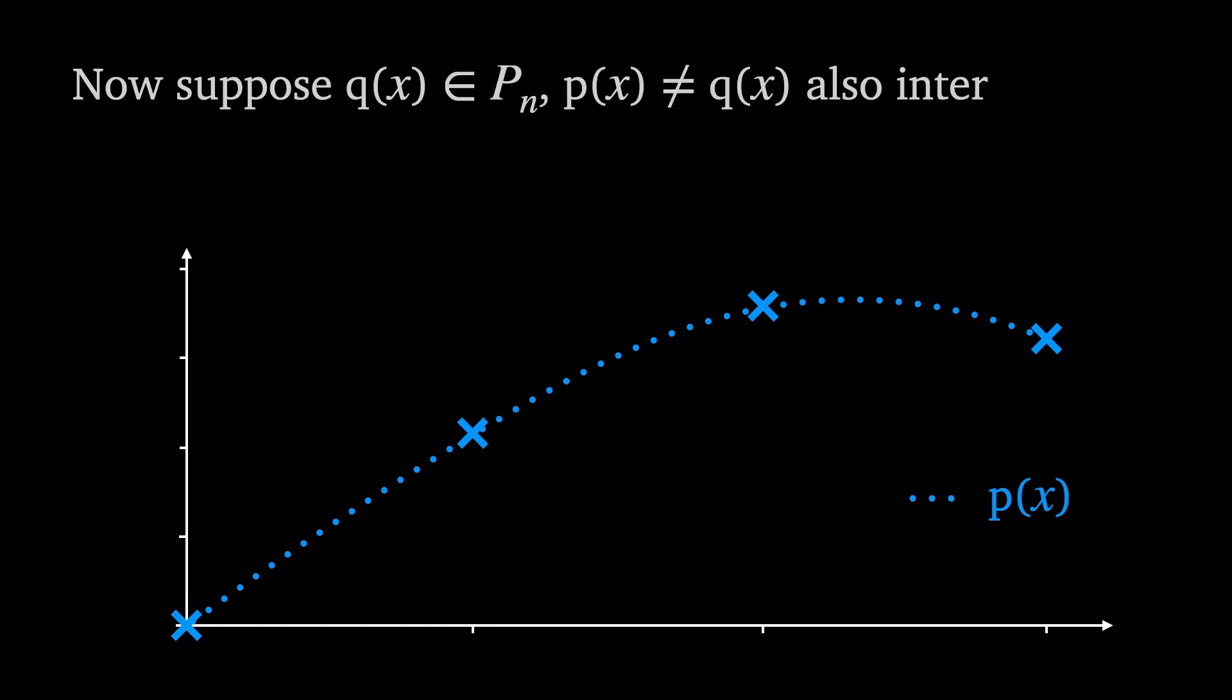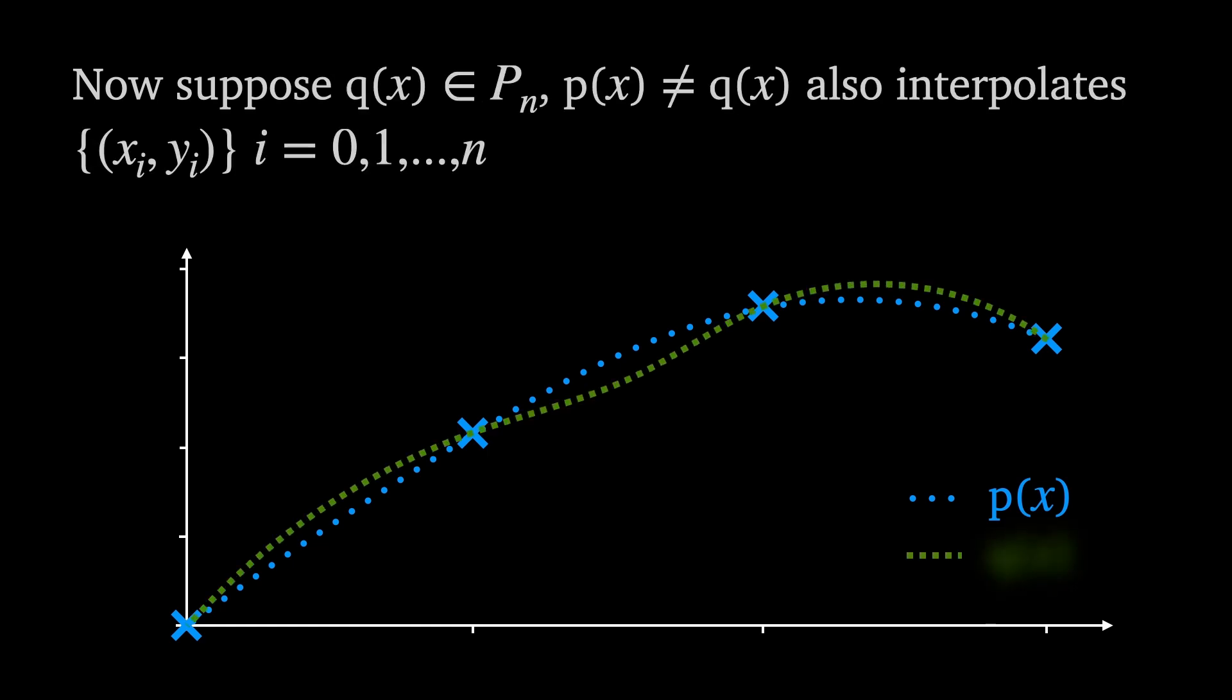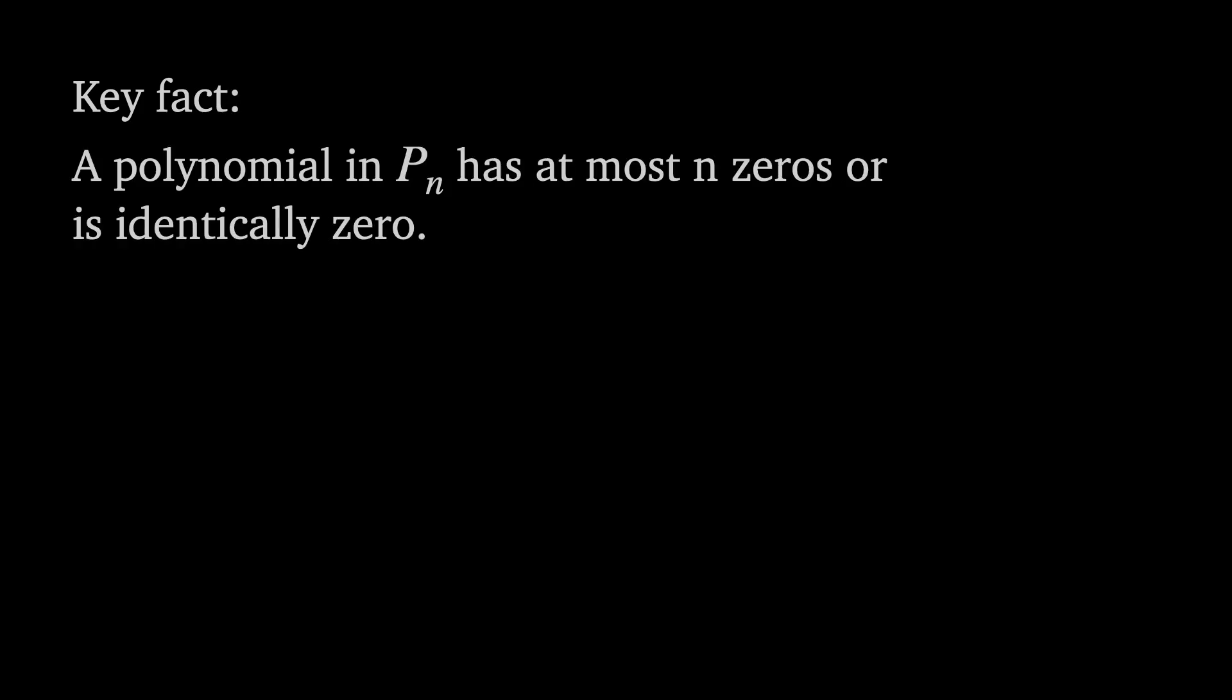So now suppose that q of x does exist, it's not equal to p of x and it also interpolates the same set of nodes. We're going to need this key fact that a polynomial in pn has at most n zeros or is identically zero.